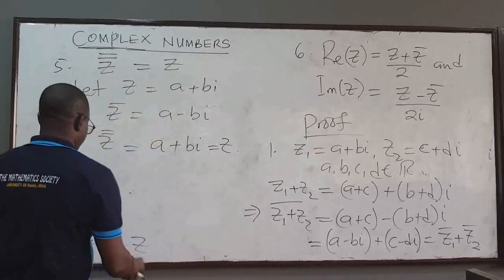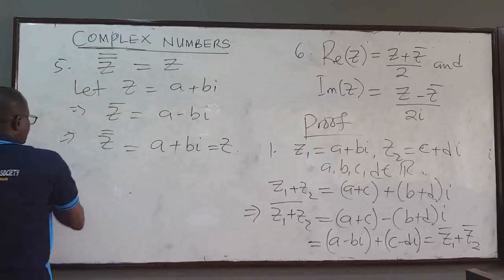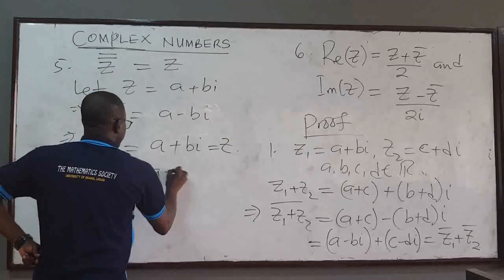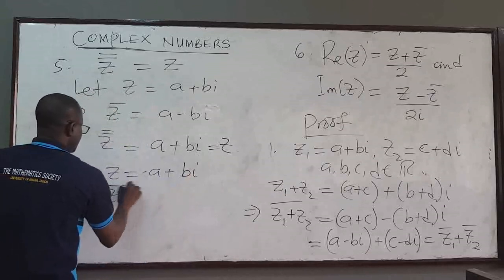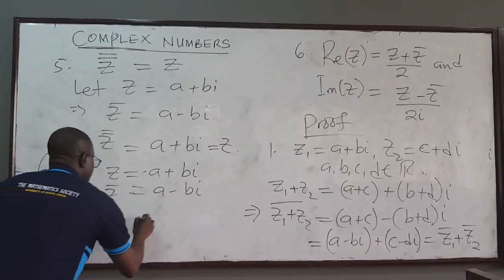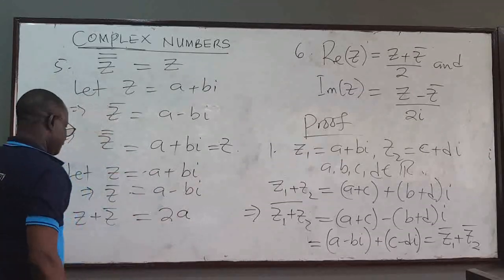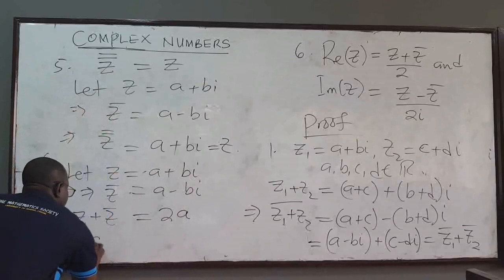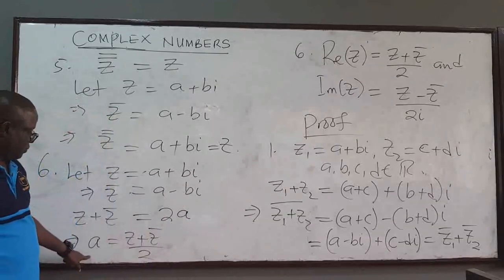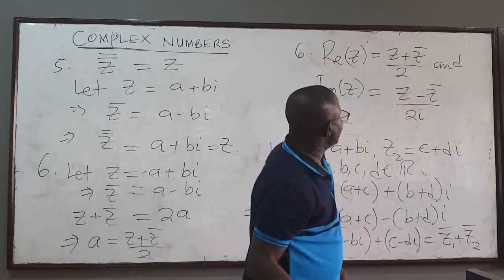We can prove proposition 6 as well — it's also straightforward. For the first part, let z equal a plus bi, which implies the conjugate of z is a minus bi. If I add them, z plus z-bar equals 2a, since the imaginary parts cancel out. If I divide by 2 then a equals (z plus z-bar) divided by 2. And a is the real part of z, which means the real part of z equals (z plus z-bar) over 2, which is what we have.